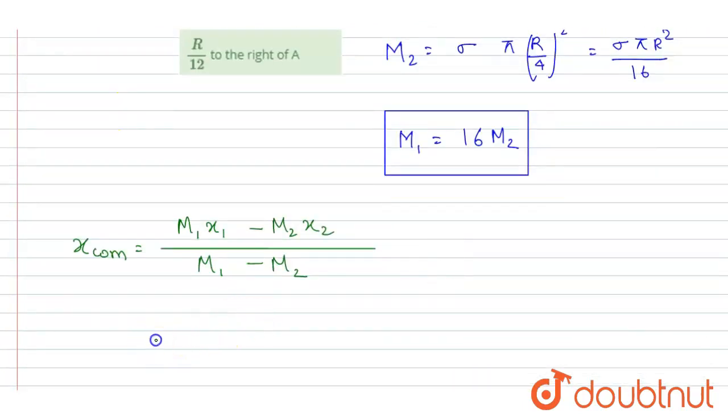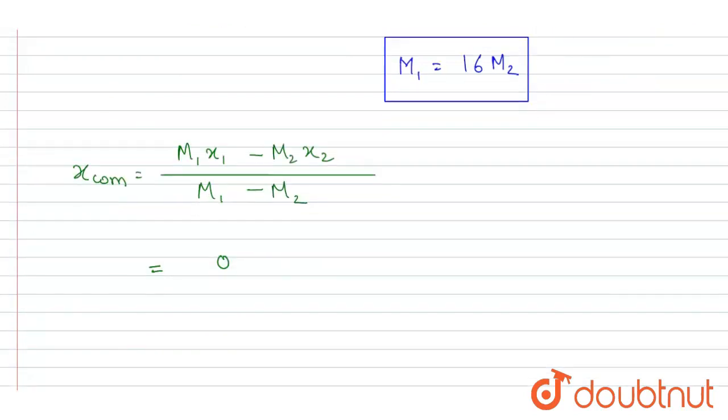And the x coordinate of m2 is 3R by 4. Now I will put the values here. So x1 here is 0, x2 is 3R by 4. And m1 is 16m2. So I will put the value here. It is 16m2 minus m2.